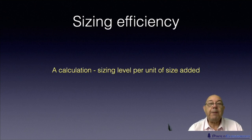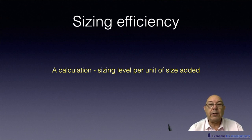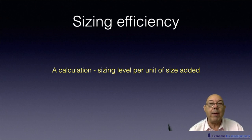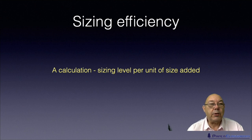The next definition is sizing efficiency. This is really a mathematical thing — a number that no one uses anymore. It's the level of sizing achieved per unit of size added. So if you've got a Cobb value of five and you are adding size at a particular rate per hour, you divide the Cobb by the rate per hour and you get the sizing efficiency. It's a very old calculation that I've not seen used for at least 20 years.